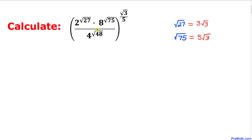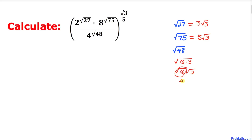Now let's focus on the exponent square root of 48. Square root of 48 can be written as square root of 16 times 3. Breaking it down: square root of 16 times square root of 3. Square root of 16 is 4, so square root of 48 can be written as 4 times square root of 3.